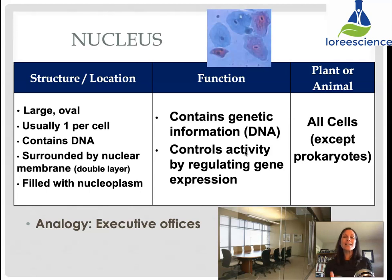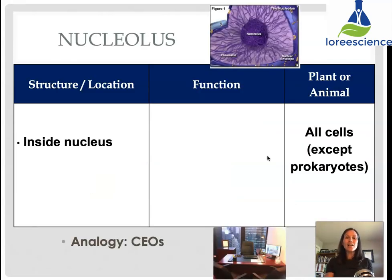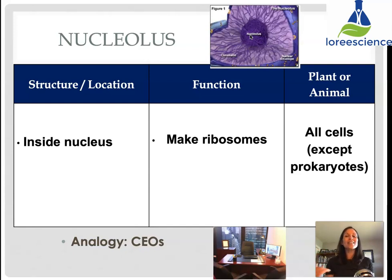The nucleus is found in all cells except prokaryotes — so all eukaryotic cells have it. In terms of analogy, this would be like the executive offices where all the big decisions are made in a company. The nuclear membrane, or nuclear envelope, must have pores to allow material in and out, but is a double layer giving extra protection to the DNA inside. The nucleolus is inside the nucleus — it is a very dense region, usually the darkest portion of the nucleus. Its function is to make ribosomes. The nucleolus is found in all cells except prokaryotes, so any cell with a nucleus has a nucleolus. Its analogy would be like the CEO, the person actually doing the decision-making within the nucleus.